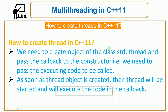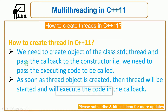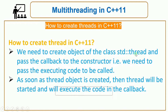To create a thread in C++11, we need to create an object of the class std::thread. We have to pass a callback to the constructor — that is, the executing code to be called. Whenever we create an object of any class, its constructor is called. So when creating the thread object, we simply pass the callback to that constructor.